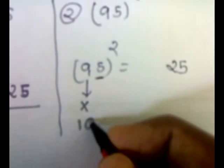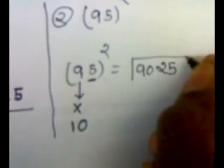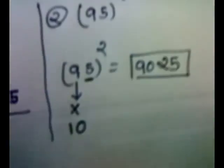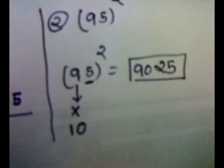That is 10. After 9, that is 10. So we will multiply 9 by 10. We'll get 90. We'll put 90 here. We get our answer. Isn't it the shortest method to find the squares?